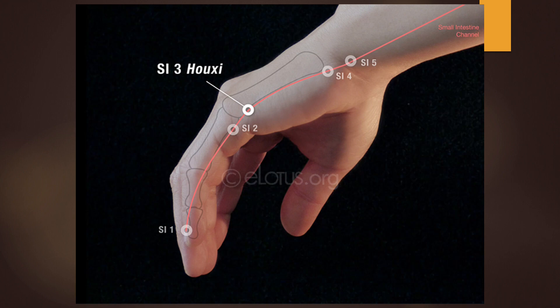SI3, if the pain is unilateral and slightly higher, level with the umbilicus. Location: when a loose fist is made, the point is on the ulnar aspect of the hand, proximal to the fifth metacarpophalangeal joint, at the end of the transverse crease at the junction of the red and white skin. SI3 is the shu-stream point of the small intestine meridian and master point of the du meridian, coupled with Bladder 62. Functions: benefits the neck and back, activates the meridian, expels exterior wind, regulates the du meridian, calms the shen, treats malaria. SI3 is an excellent point for neck and back issues when coupled with Bladder 62. Shu-stream points are where the chi starts to pour down the meridian; they are known to alleviate heaviness and pain in the joints. Needling: perpendicular insertion 0.5 to 1 cun.